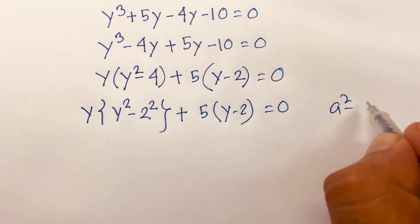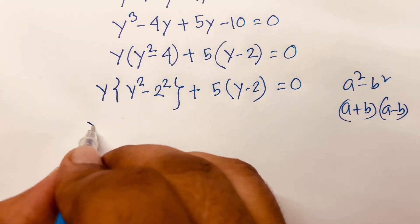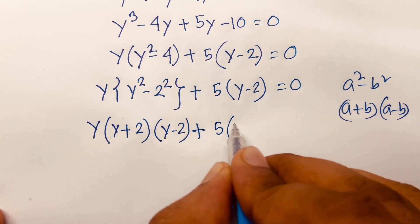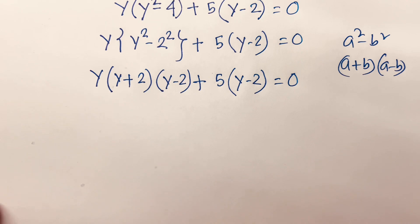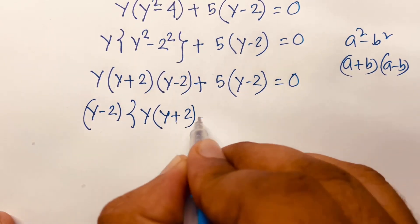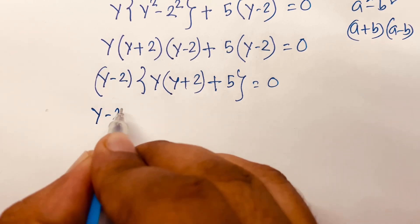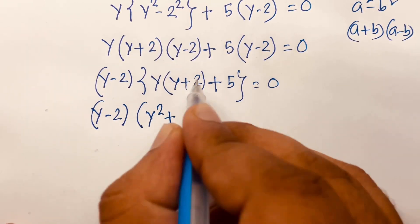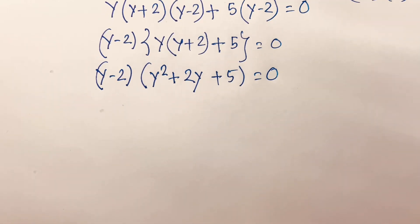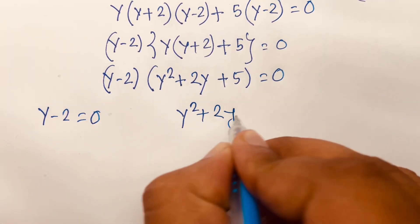We know the rule a squared minus b squared equals a plus b times a minus b. Applying this, with y minus 2 as the common factor, the equation factors as y minus 2 times y times y plus 2 plus 5 equals 0. This becomes y minus 2 times y squared plus 2y plus 5 equals 0. So we have two cases: case one is y minus 2 equals 0, and case two is y squared plus 2y plus 5 equals 0.